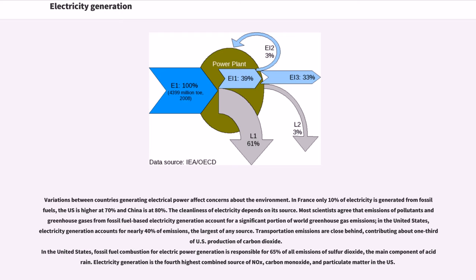Variations between countries in generating electrical power affect concerns about the environment. In France only 10% of electricity is generated from fossil fuels, the US is higher at 70% and China is at 80%. Most scientists agree that emissions of pollutants and greenhouse gases from fossil fuel based electricity generation account for a significant portion of world greenhouse gas emissions. In the United States, electricity generation accounts for nearly 40% of emissions, the largest of any source. Transportation emissions are close behind, contributing about one-third of US production of carbon dioxide. Fossil fuel combustion for electric power generation is responsible for 65% of all emissions of sulfur dioxide, the main component of acid rain. Electricity generation is the fourth highest combined source of NOx, carbon monoxide, and particulate matter in the US.